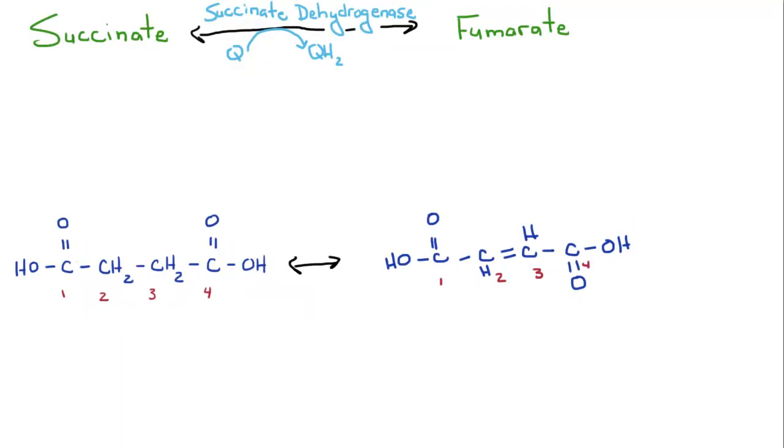Succinate is then going to be oxidized to make what is called fumarate. During the process, it's going to reduce a molecule called Q, also known as quinol, or coenzyme Q. It's going to reduce that to QH2. Succinate dehydrogenase is just going to chop off two of these hydrogens right here to make a trans-double bond, forming the molecule fumarate.